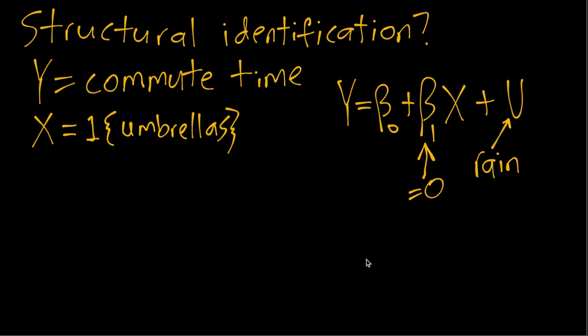So if it's raining, u will be a larger positive number which will mean that we'll have a higher commute time, a longer commute time. If it's not raining then u will tend to be lower than that.